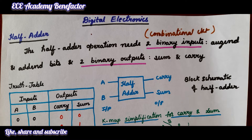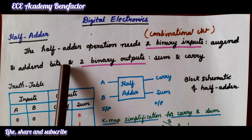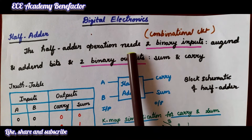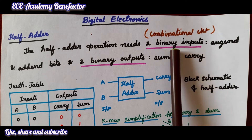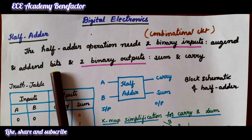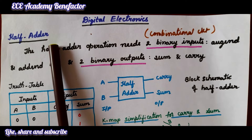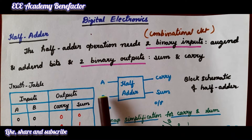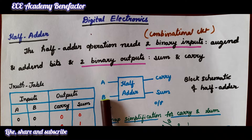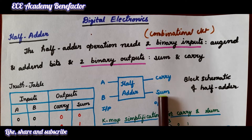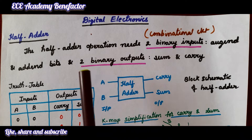Let us start with the definition of a half adder. The half adder is a combinational circuit which performs addition operation on binary inputs. The half adder operation needs two binary inputs, known as augend and addend, and two binary outputs — carry and sum. This is the definition of a half adder.